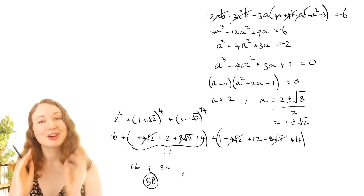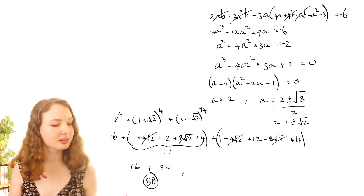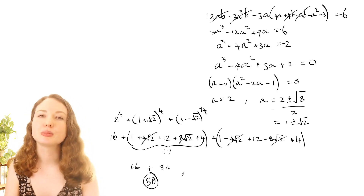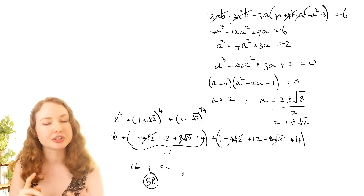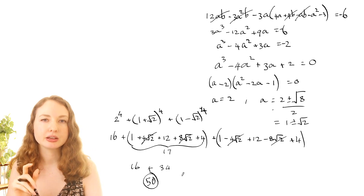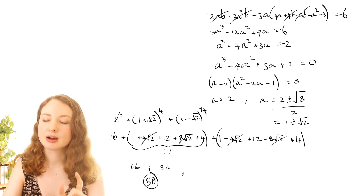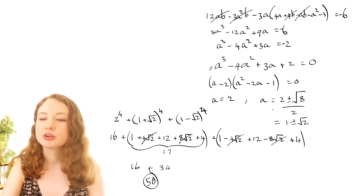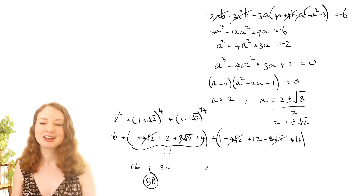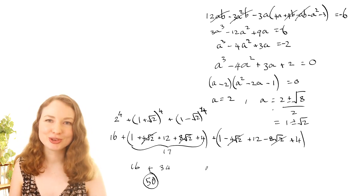The official booklet solution used an approach in between these two: they started with the elimination-style working to find abc and ab+bc+ac, then used those values directly as coefficients of the cubic — going straight to the cubic from there and finishing the same way. So there are at least three different methods you can use to solve this problem.